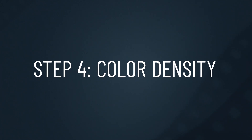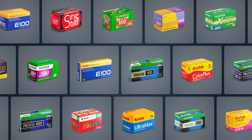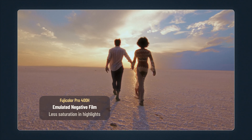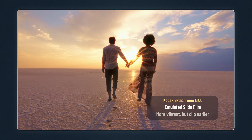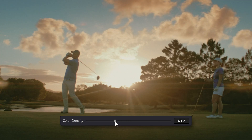Color Density controls the color intensity within the compressed area. Different film types handle color in highlights differently. Negative films usually lose saturation in the highlights, while slide films stay more vibrant but clip earlier. With color density set to zero, highlights are less saturated, like with negative film. At 100, colors stay rich, emulating the look of slide film.